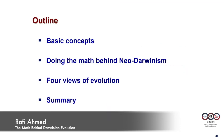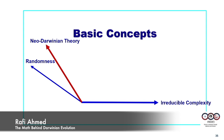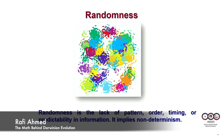Here is the outline. Randomness and irreducible complexity have direct bearing on Darwinian evolution. Randomness is the lack of pattern, order, timing, and predictability information.